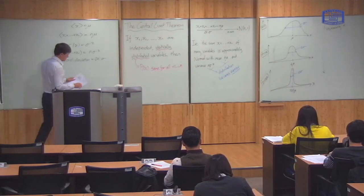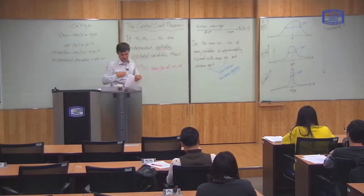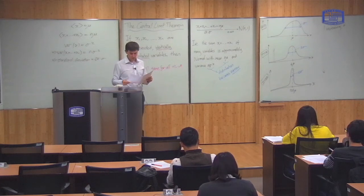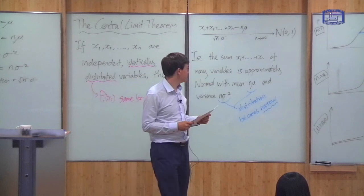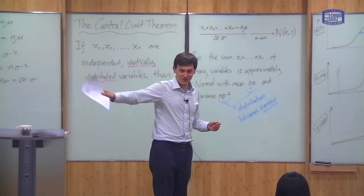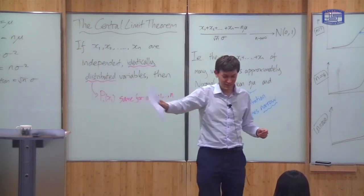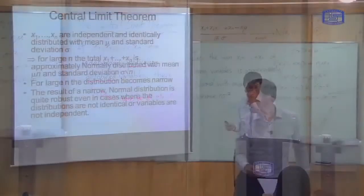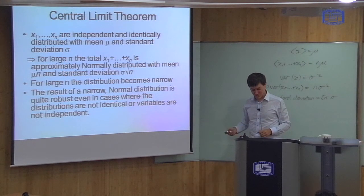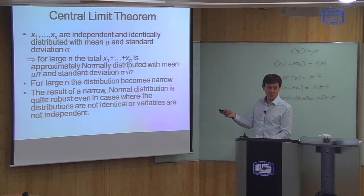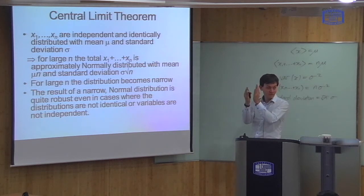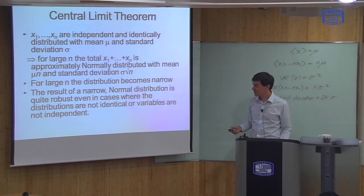That's very important for the theory of statistical mechanics — this fact that if I add lots of variables together the distribution becomes narrow. I want to give you some examples of this to make you more used to the idea of the central limit theorem. I've prepared a presentation — what you have to look out for is that the shape becomes normal and the distribution becomes narrow.